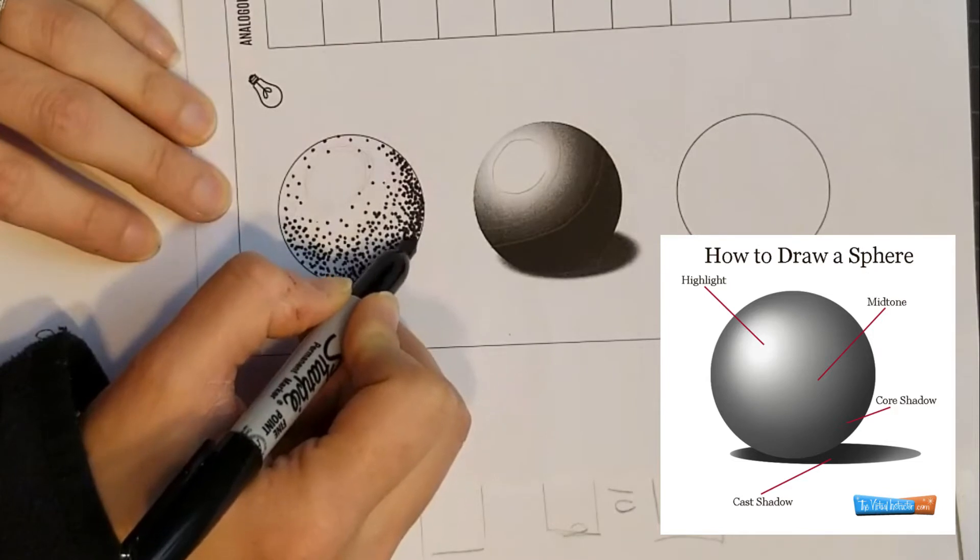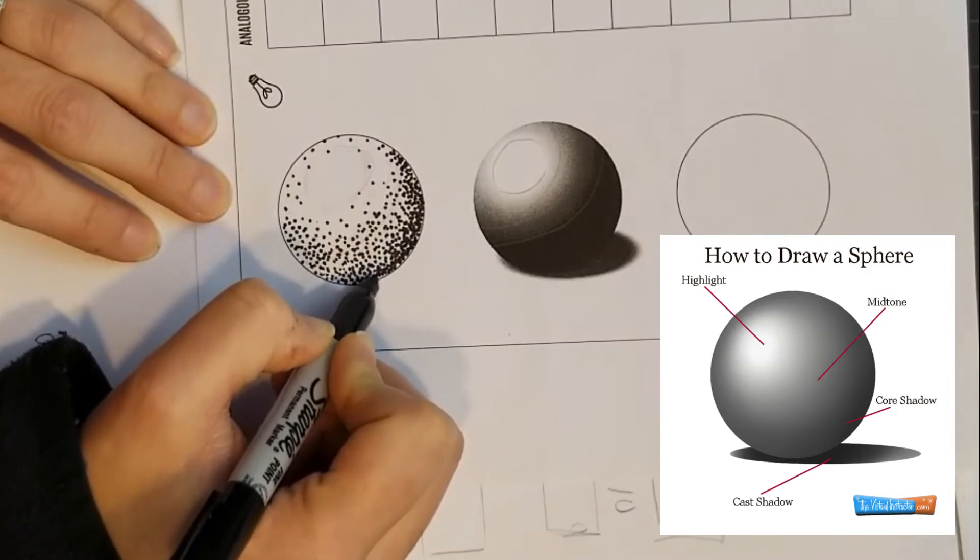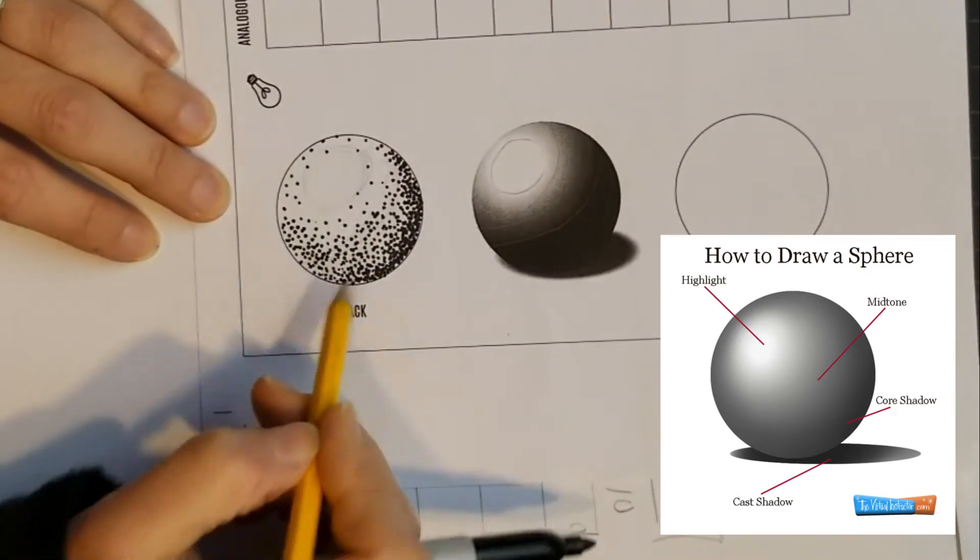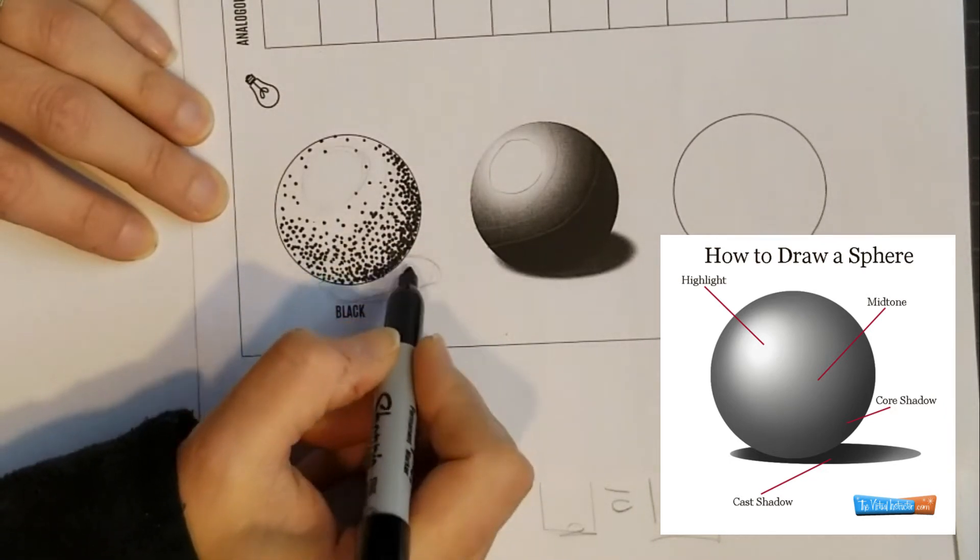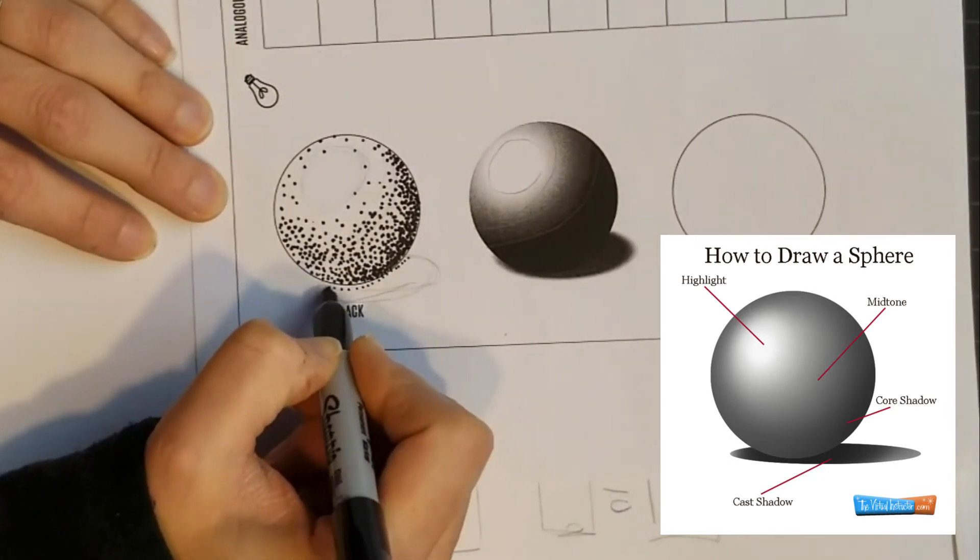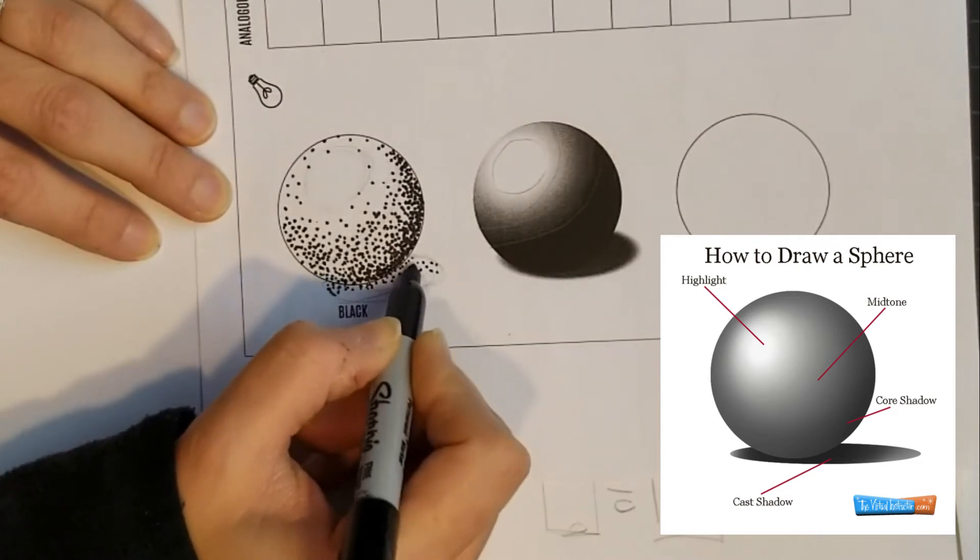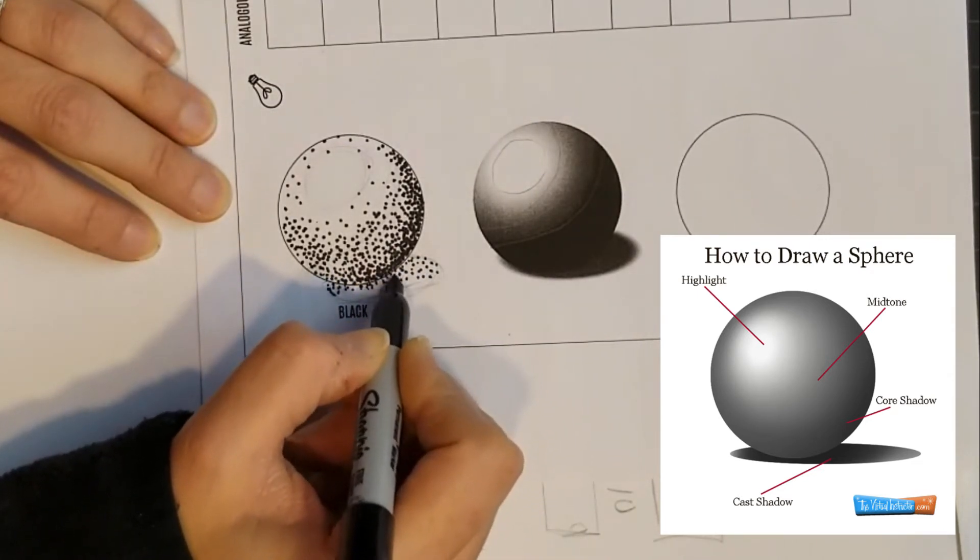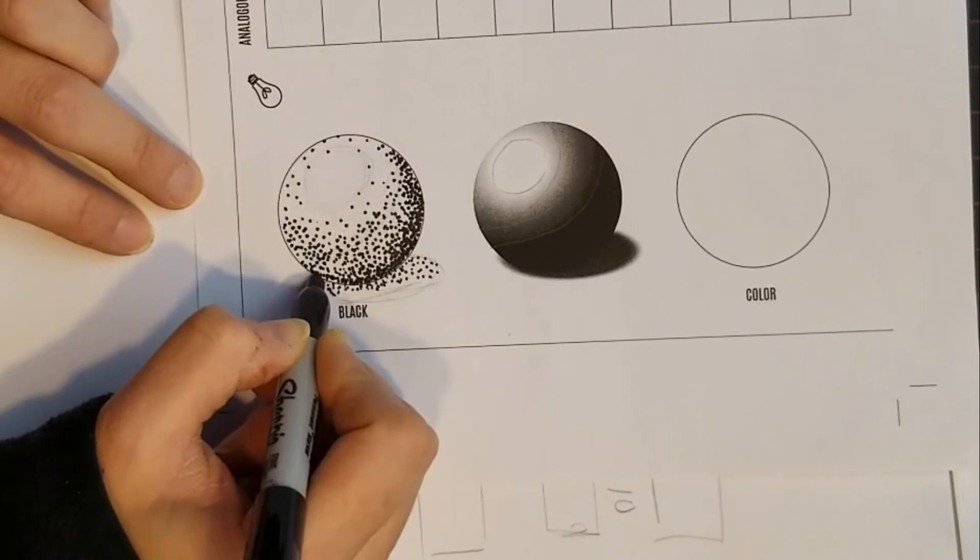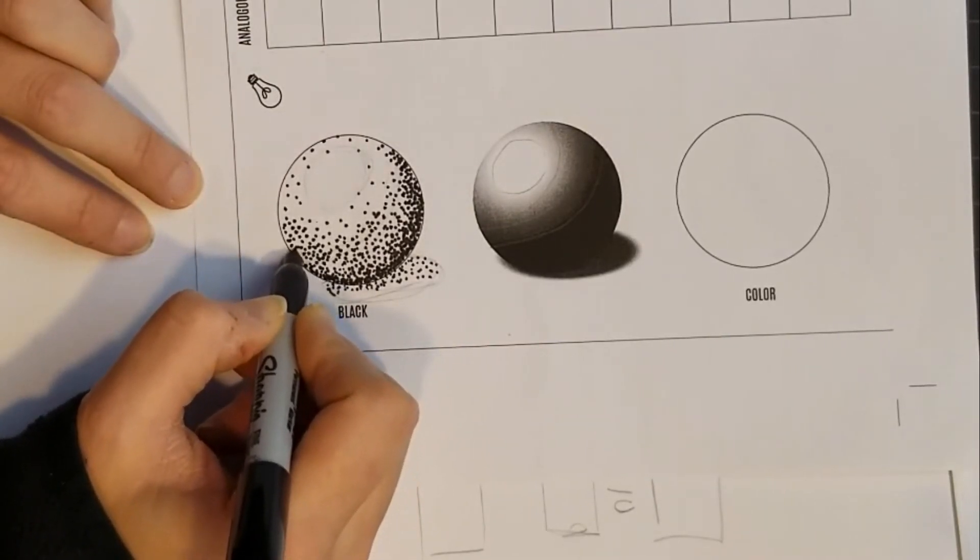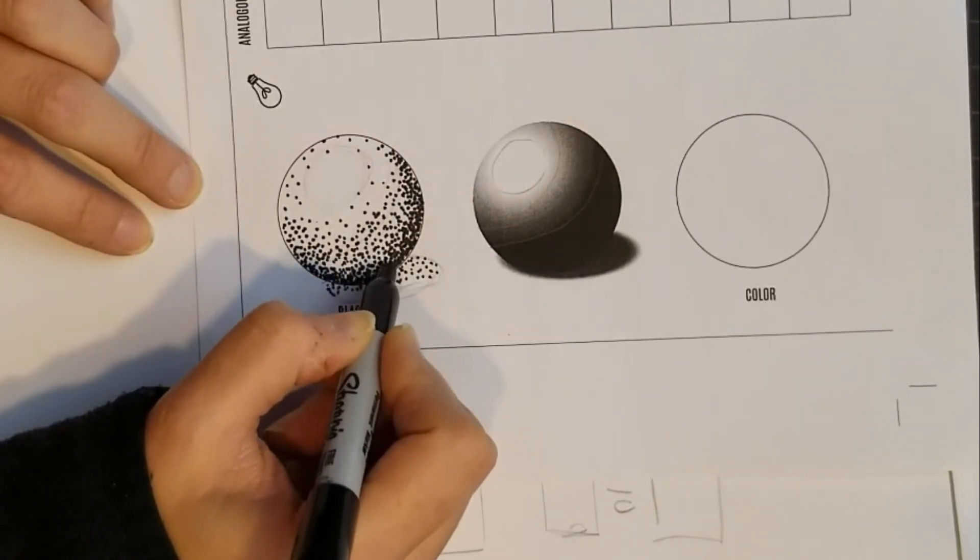You would continue adding in your dots to get the values where they need to be to create the illusion of a 3D sphere. Don't want to forget the little cast shadow as well. Underneath is a shadow and we'll fade it out a little bit. You want to take your time. You want this to be nice and neat. You want these to be dots, not marks because you were just going crazy with your marker.